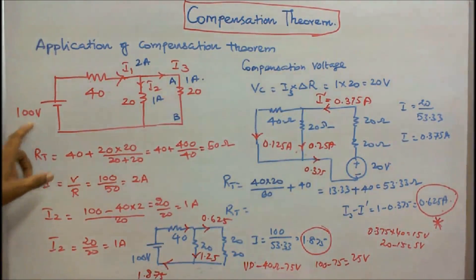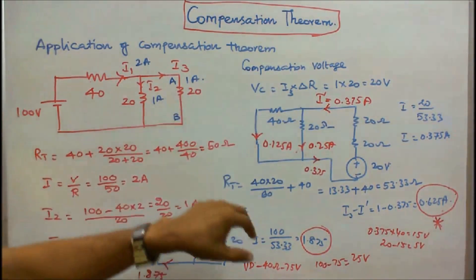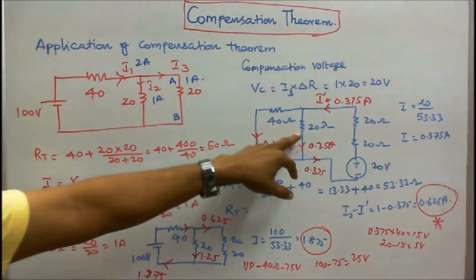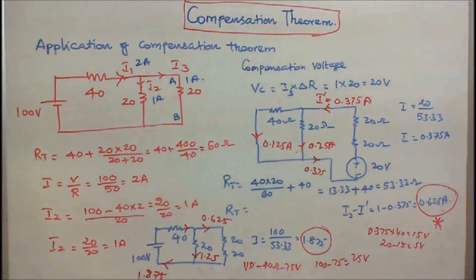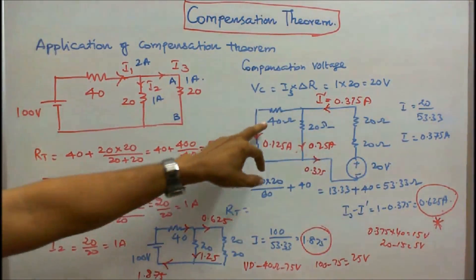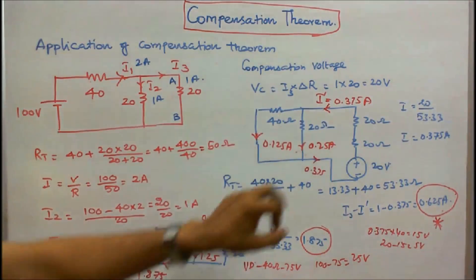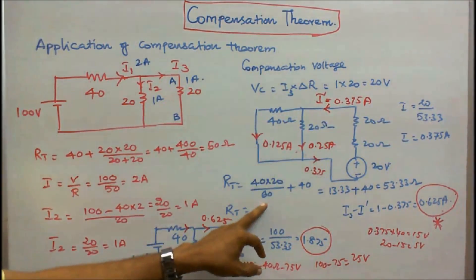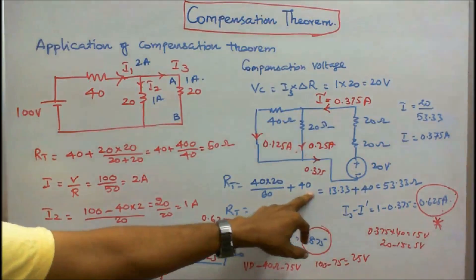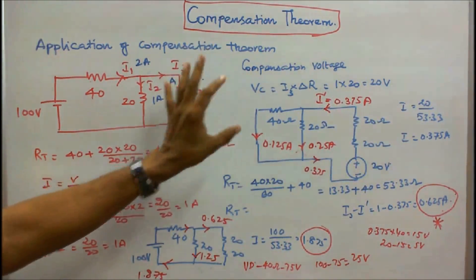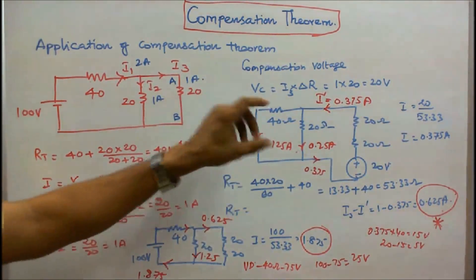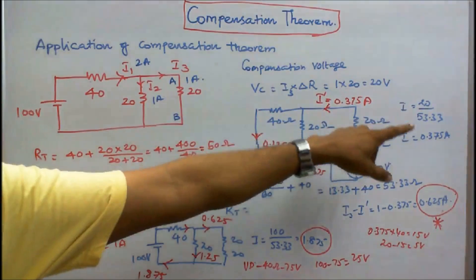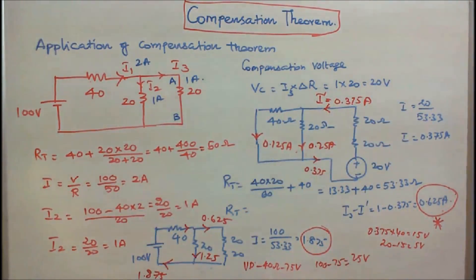The source is short-circuited since its internal resistance is assumed to be zero. I redraw the circuit: 40 ohm, 20 ohm, 20 ohm, and the change in resistance of 20 ohm in the branch, with a compensation voltage of 20 volts. In this redrawn circuit, 40 and 20 are in parallel, and in series with 20 plus 20 equals 40. Total resistance is 40 times 20 divided by 60 plus 40, which equals 53.33 ohms. I dash equals V by R equals 20 by 53.33 equals 0.375 amps.